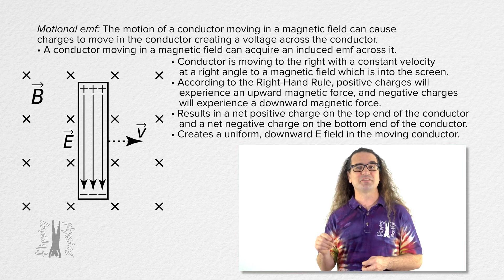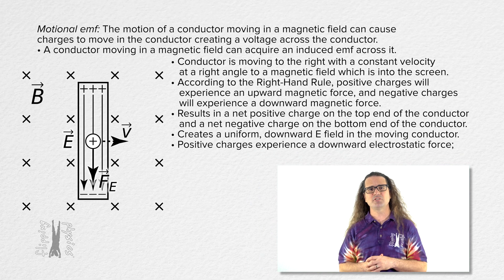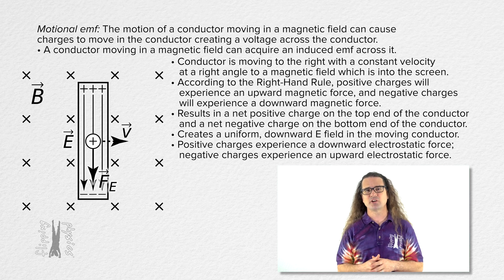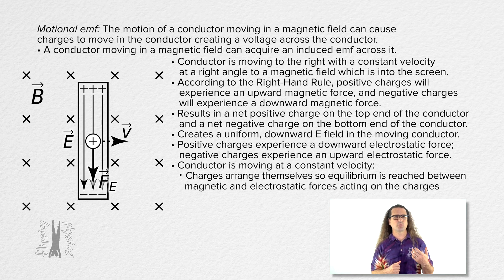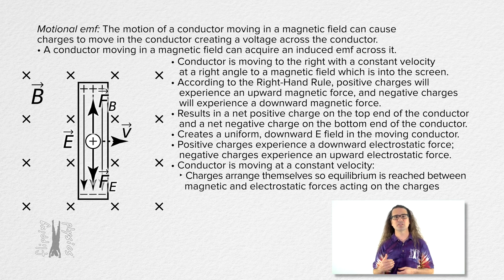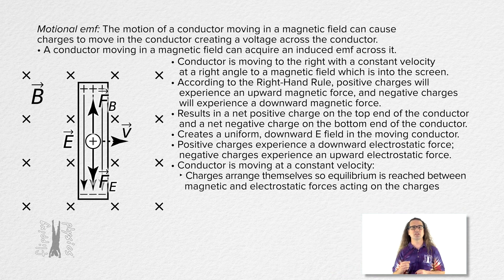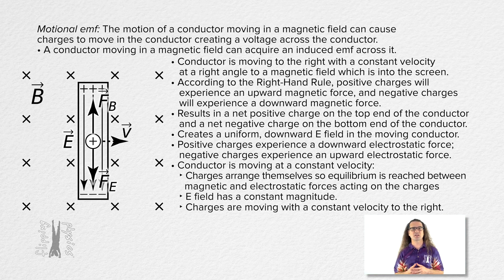As a result of the downward electric field in the conductor, positive charges will experience a downward electrostatic force and negative charges will experience an upward electrostatic force. Because the conductor is moving at a constant velocity, the charges arrange themselves such that equilibrium is reached between the magnetic and electrostatic forces, with no vertical motion of the electric charges.